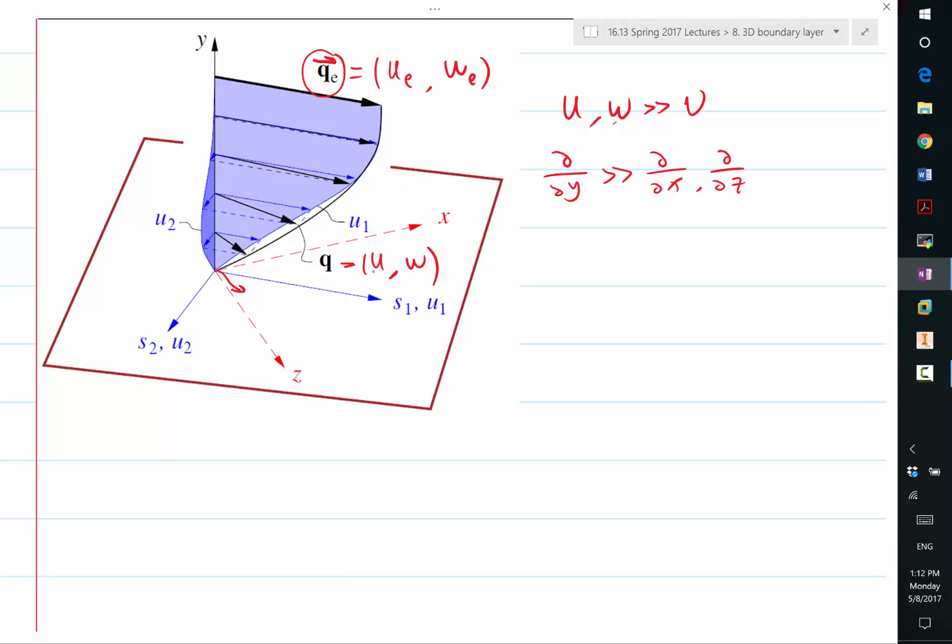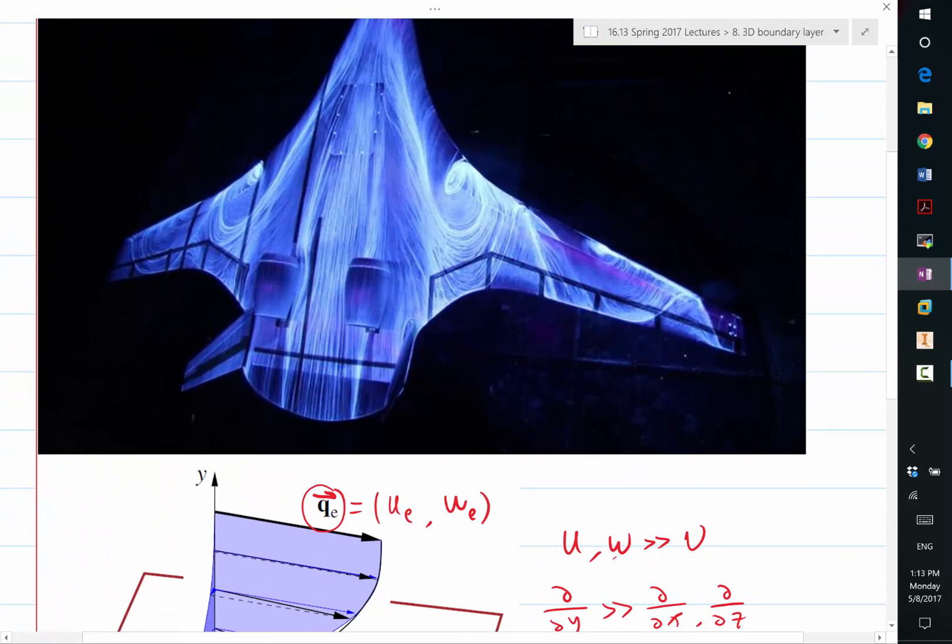That is why when you see the oil flow on top of a model, the oil flow direction can be remarkably different from the flow direction immediately outside the boundary layer.